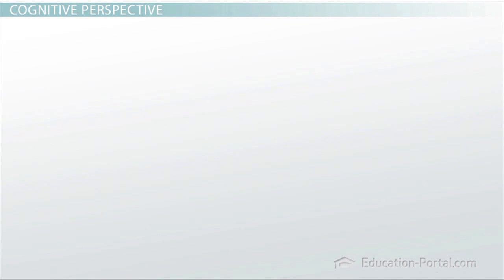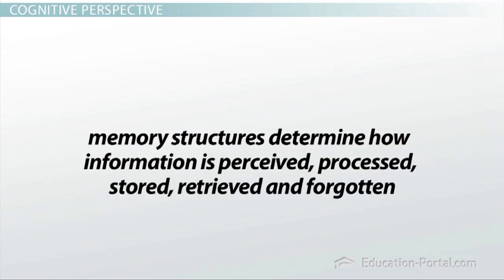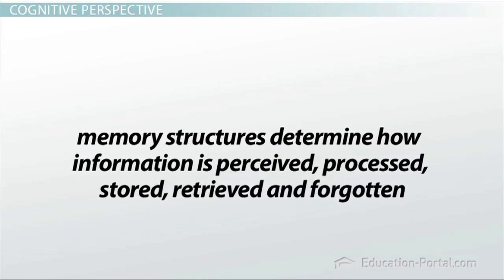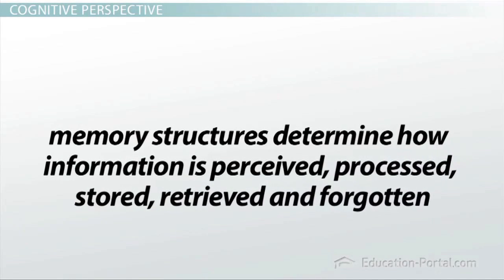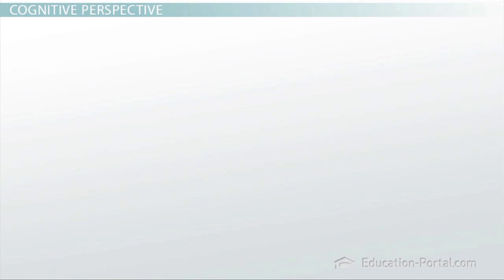Second, cognitive psychologists claim memory structures determine how information is perceived, processed, stored, retrieved, and forgotten. Cognitive psychology encompasses perception, categorization, memory, knowledge representation, language, and thinking processes.